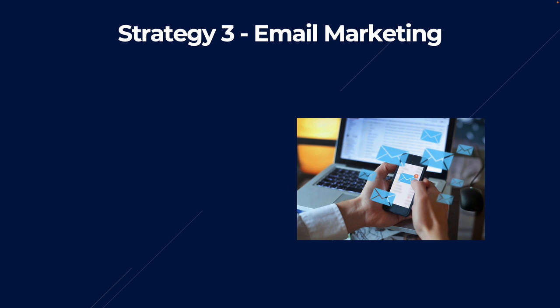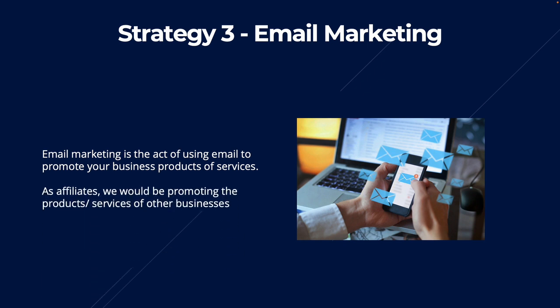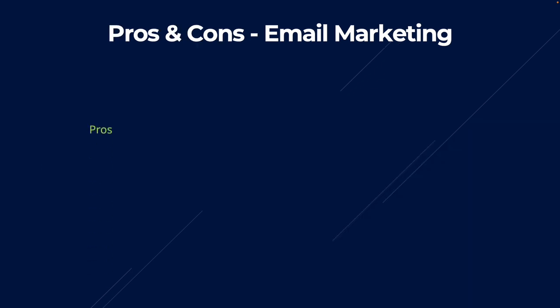Strategy number three: email marketing. Email marketing is the act of using email to promote products or services — and as affiliates, we'd be promoting the products or services of other businesses. The biggest pro of email marketing is that you can get pretty much instant sales. If you already have a big email list, you can send out an email with an offer and people can buy it instantly.